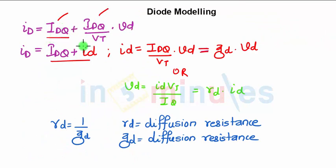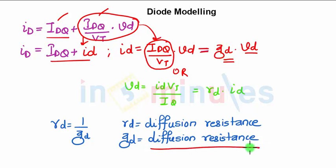So I can write it as IDQ plus this entire term is replaced with small id. Now id can be written as IDQ/Vt × Vd. So Vd is the actual voltage. We can replace this DC term as current upon voltage, which is the conductance. So it is written as Gd, which is the diffusion conductance.